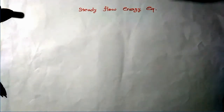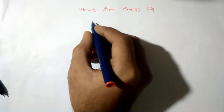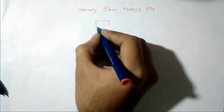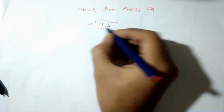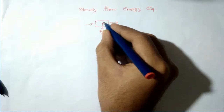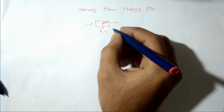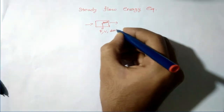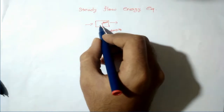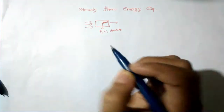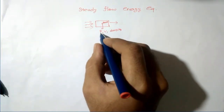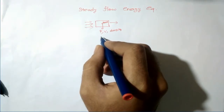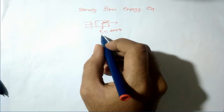Steady flow is a flow where the pressure at a point in a fluid flow, the velocity at that point, and the density remain the same. If you consider a fluid flowing through a pipe, a point is considered and measurements are taken at that point at various times. If the pressure, velocity, and density remain constant at all times, then the flow is considered steady flow.